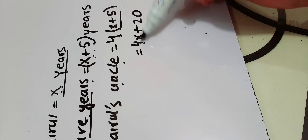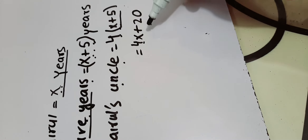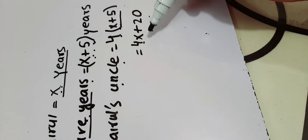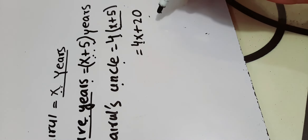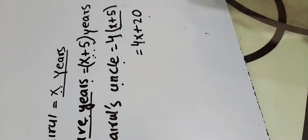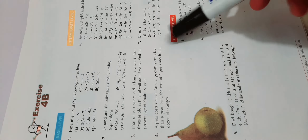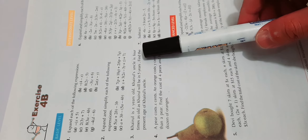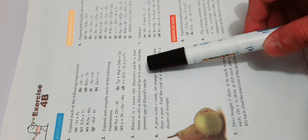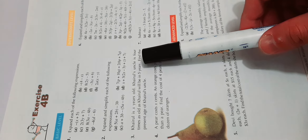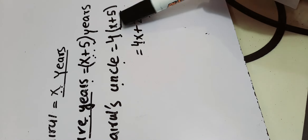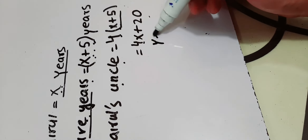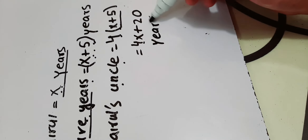This is the age of his uncle. They want to find the present age of Khairul's uncle. According to the question, Khairul's uncle is 4 times as old as Khairul will be in 5 years, so his present age is 4 times (x plus 5), that is 4x plus 20 years. This is the answer for question number 3.